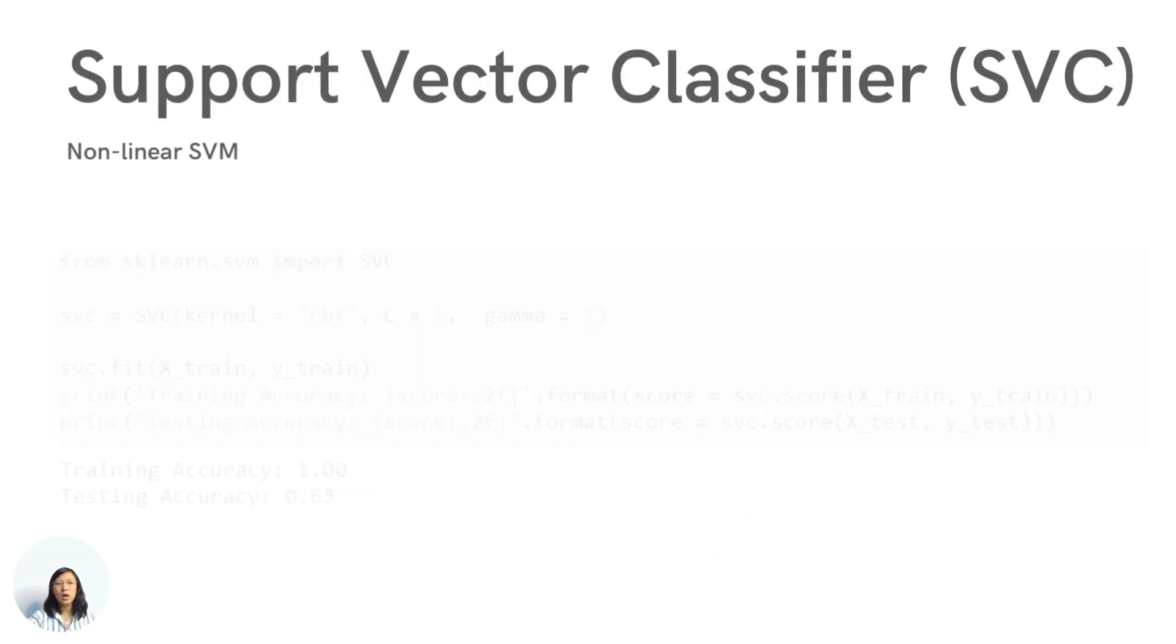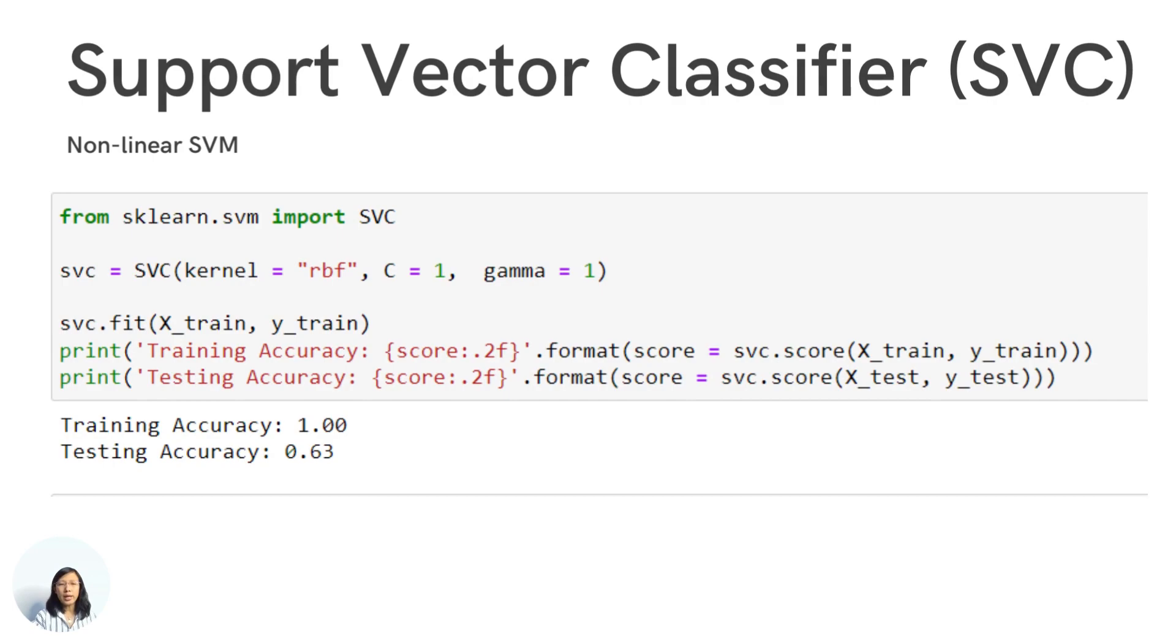So here, let's see how it works. We set the kernel to be RBF, and then here comes the hyperparameter C and gamma. Hyperparameter C is to control the regularization effect, like what we have discussed in regression and logistic regression. Gamma, the value of gamma, especially for the RBF kernel, controls the smoothness of the boundary. If you decrease the gamma value, you can make the boundary smoother. So for this example, we use C equal to 1 and gamma equal to 1.